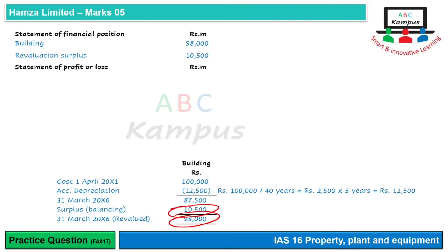Statement of profit or loss jab hum banayenge to humari depreciation kitni show hogi? Ab yeh humari 5 years ki depreciation hai, to humne 1 year ki depreciation show karni hai — 2,500. Aur depreciation jo hai wo revalued amount par calculate nahi hogi, pehle wali amount par hogi, kyunke revaluation year end par hui hai, year start par nahi. To original wali hi depreciation is saal mein bhi rahi hai — 2,500 ki, wo hum show kar denge.